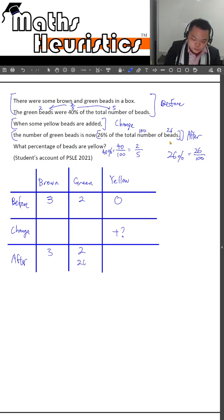We can say that this will be 26 parts out of a total of 100 parts, which means that if 2 units represents the same amount as 26 parts, we can make them the same.